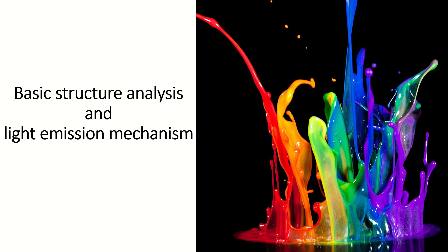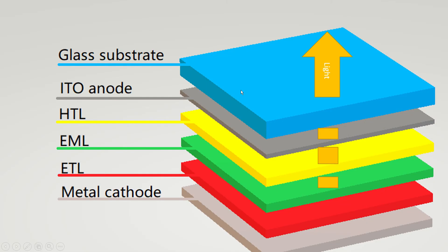Here I will present you the basic structure analysis and light emission mechanism of OLED. This is the basic structure of OLED we have previously talked about. Note that it's a multi-layer structure and each layer is very thin, thus light can penetrate it.